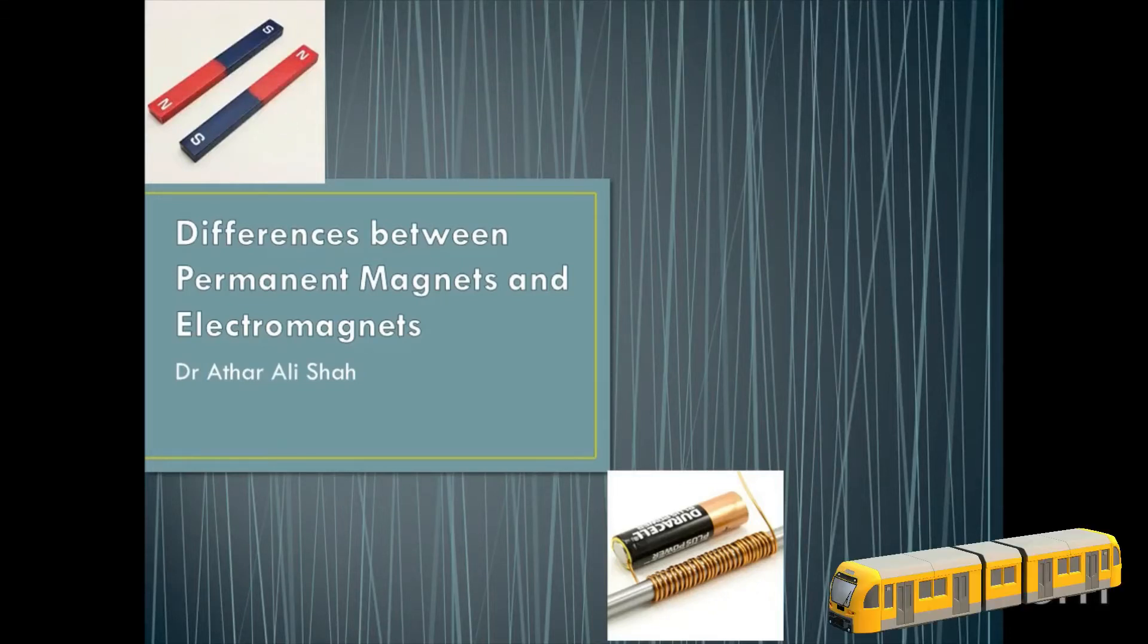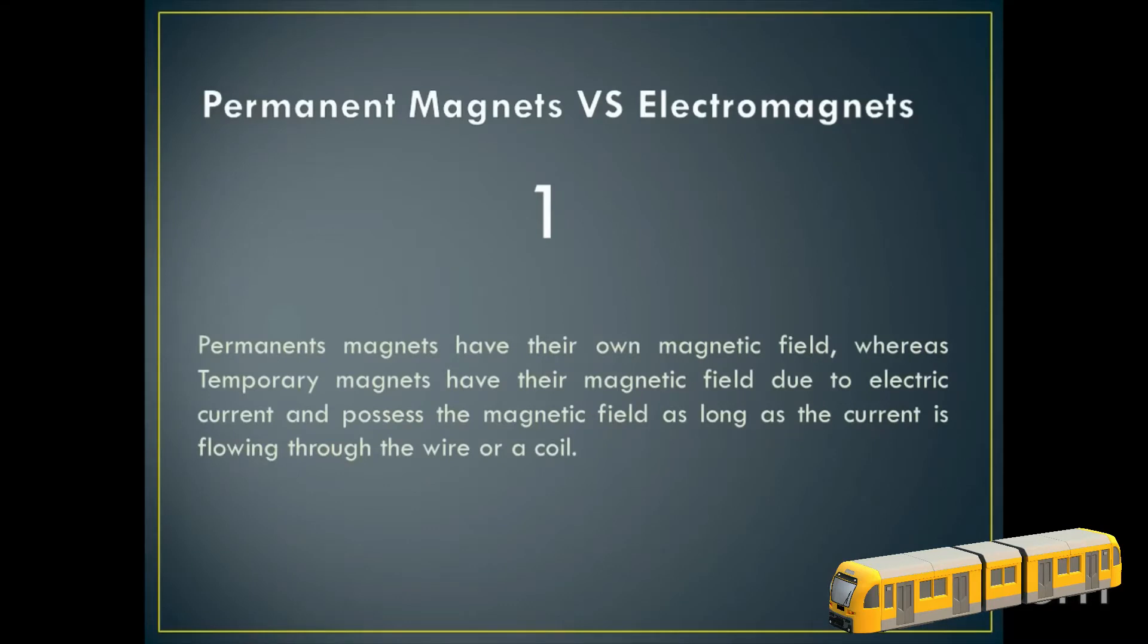Hello guys, I am going to tell you about the differences between permanent magnets and electromagnets. Number one: permanent magnets have their own magnetic field.